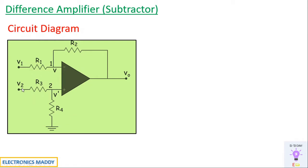In case you are supplying V1 to be greater than V2, you will be getting an output voltage with respect to that. For example, if you have V1 equal to 2 volts and V2 equal to 4 volts, the output will be equal to 2 — that is, the difference between 4 and 2.